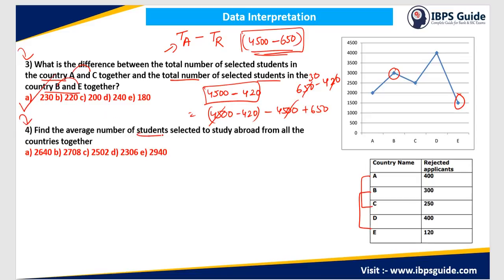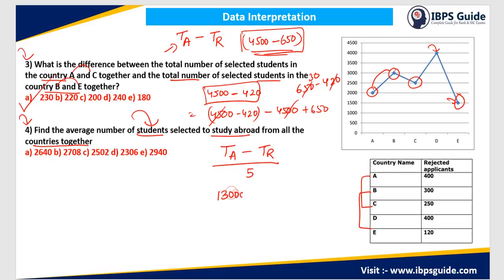Question 4: Find the average number of students selected to study abroad from all countries together. Total applied minus total rejected, divided by 5 countries. Total applied: 2000 plus 3000 plus 2500 plus 4000 plus 1500 equals 13,000. Total rejected: 400 plus 300 plus 250 plus 400 plus 120 equals 1470. So we need 13,000 minus 1470, divided by 5.